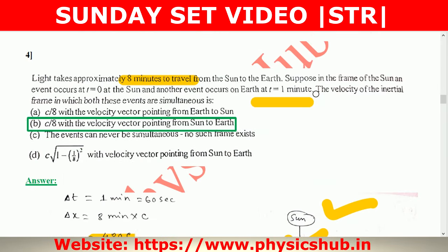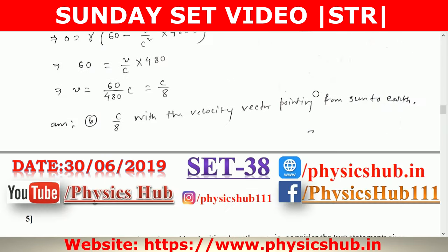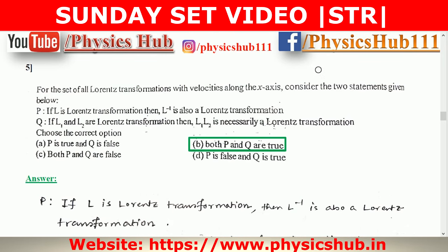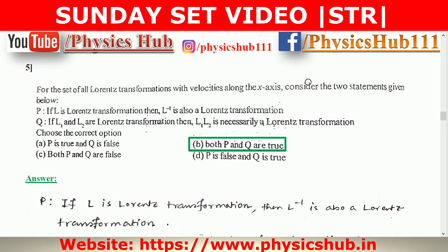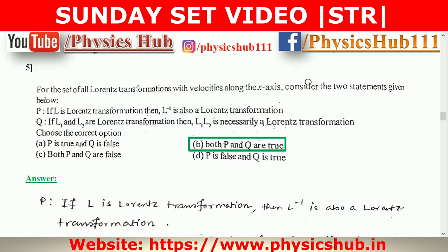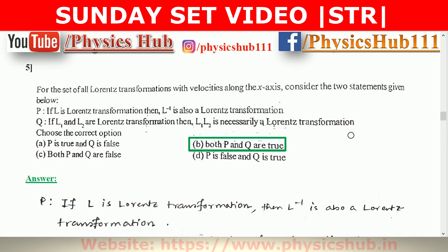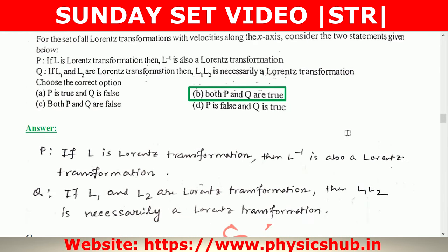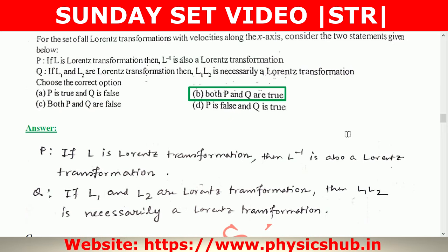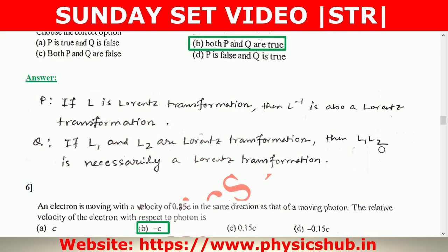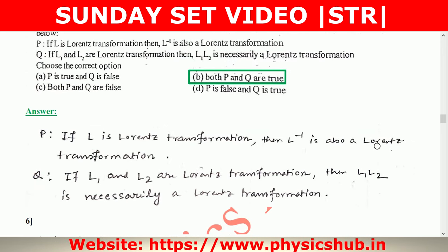Question 5: For the set of all Lorentz transformations with velocities along the x-axis, consider two statements: (1) if L is a Lorentz transformation, then L⁻¹ is also a Lorentz transformation; (2) if L₁ and L₂ are Lorentz transformations, then L₁·L₂ is necessarily also a Lorentz transformation. Both statements are correct. The inverse of a Lorentz transformation is also a Lorentz transformation, and the product of two Lorentz transformations is also a Lorentz transformation — you can verify this with examples.